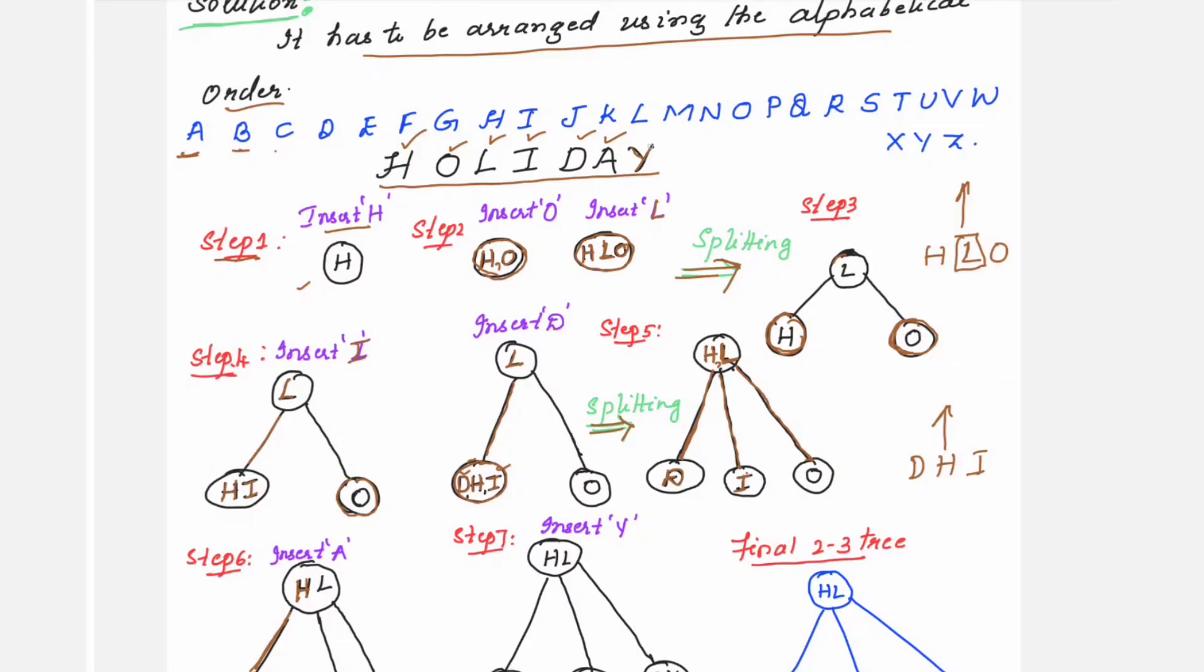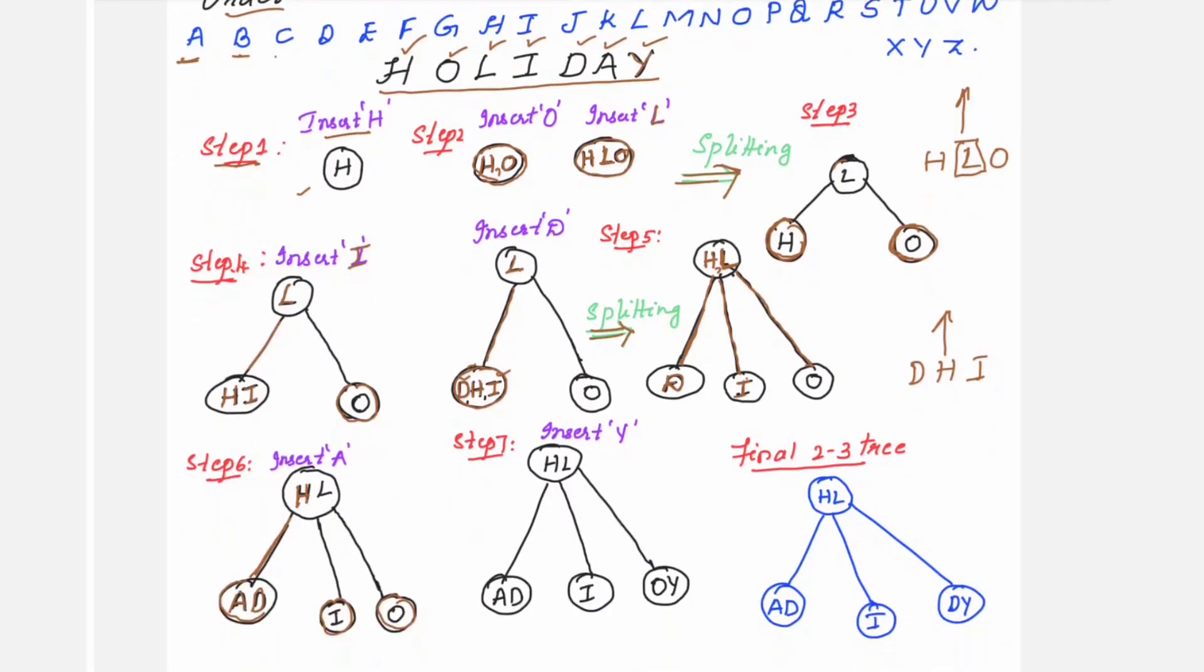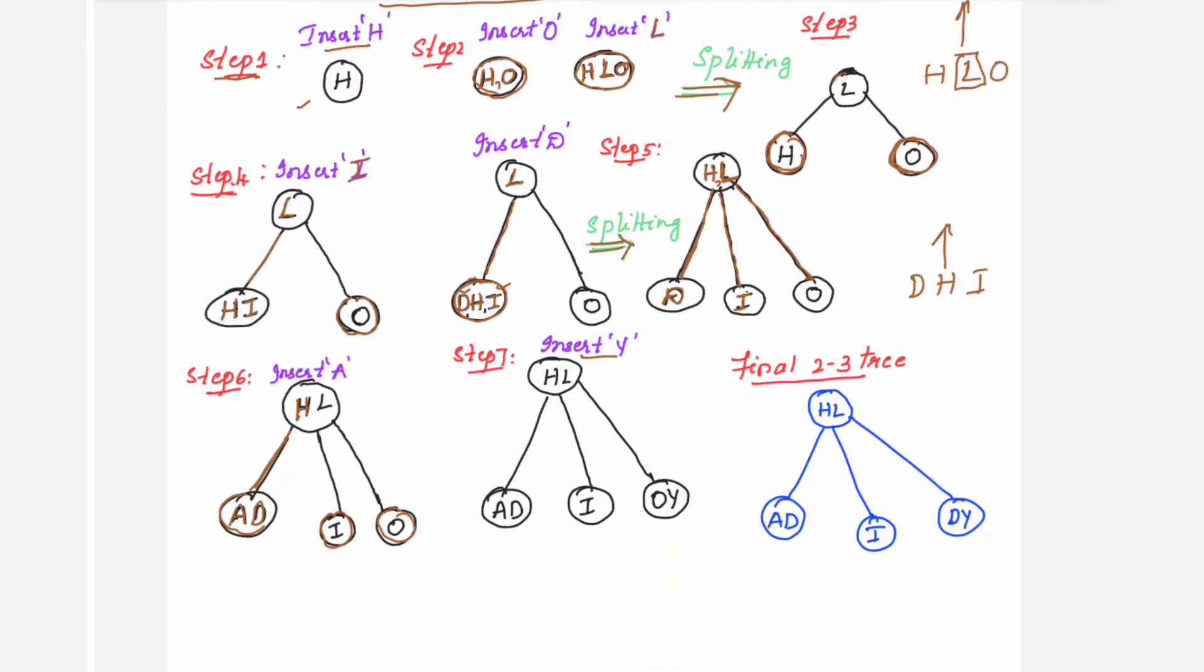Then you have the last alphabet here, Y. You will insert Y. Y is after L, so it will come towards the right side, not in the middle. It will come towards the right side. Right side already O is there. This Y will come after O, so you are writing O, Y. And the other two child nodes you are going to write as it is.